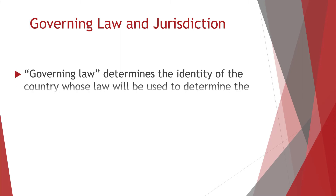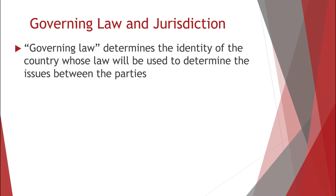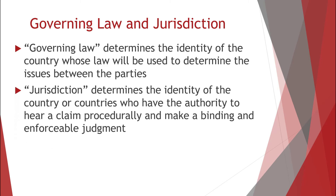Governing law determines the identity of the country whose law will be used to determine the issues between the parties — for example, the law of England and Wales. Jurisdiction determines the identity of the country or countries who have the authority to hear a claim procedurally and make a binding and enforceable judgement.